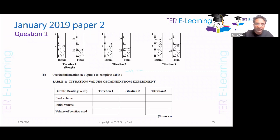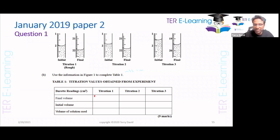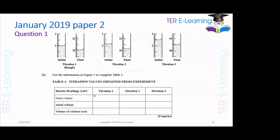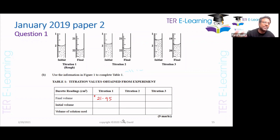I want you all to look at the diagrams and tell me: for this cell here, what value am I going to put for the final volume? That's 21.95 — 21.95 is correct. So you're going to put 21.95 as the final volume. Those of you doing it privately, when you do the titration you are actually looking at the burette; they've given you pictures of what it looks like. What is my initial volume in this case?